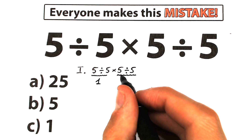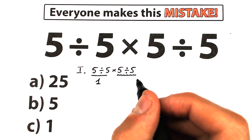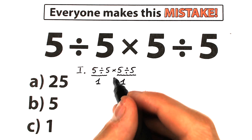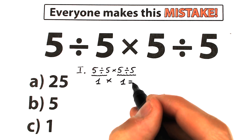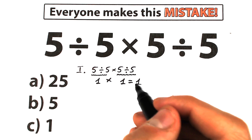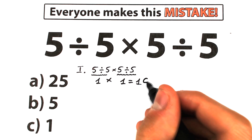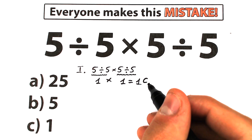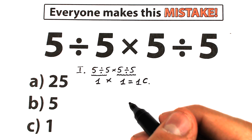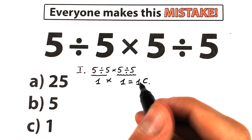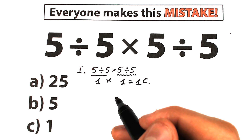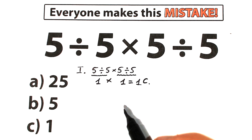We have 5 ÷ 5 = 1 on the left, and 5 ÷ 5 = 1 on the right, and the multiplication in the middle gives us 1 × 1 = 1. So this gives Option C. One part of students solves it this way — but I want to say this is not a good solution, because we are solving the question absolutely randomly, jumping from left to right.